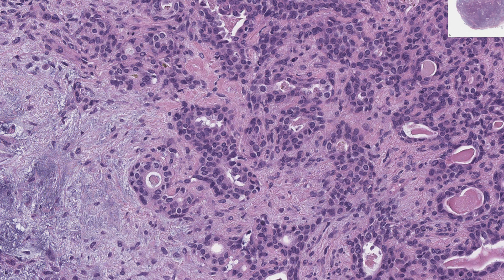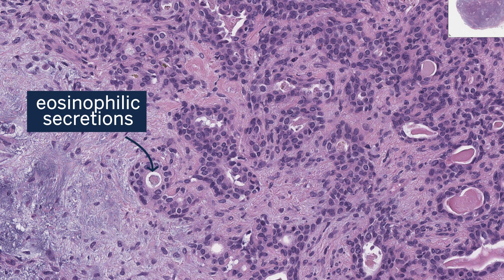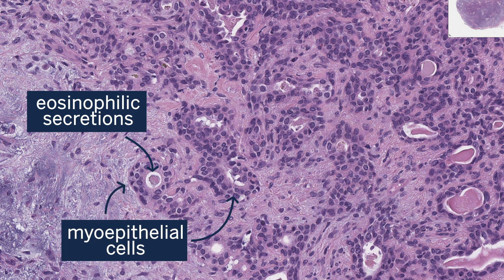What do we mean by biphasic? We can see these epithelial structures filled with eosinophilic secretions, and then surrounding them is a layer of cuboidal cells — those are the abluminal cells, the basal and/or myoepithelial cells.